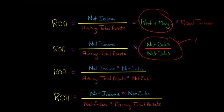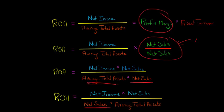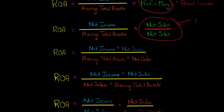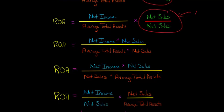Now I'm just going to switch something around to make it easier to see. I'll keep net income times net sales in the numerator. In the denominator, I'll flip the order — putting net sales on the left and average total assets on the right. This doesn't change the math; it just makes the next step easier to see.